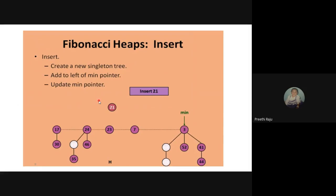Now we'll see the insert process. There is one case in the insert process — it is very simple. Create a new tree: if you want to add a new element, you simply add the element near the minimum pointer. In the circular linked list, elements are added before the root pointer. You need not check for value or whether it will be a child or parent — simply add the element in front of the minimum pointer.